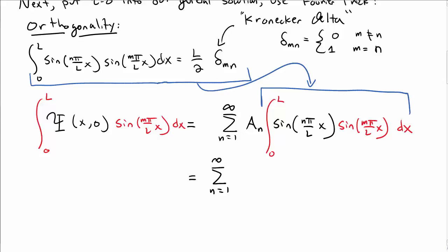And the beauty of doing this is that this integral over here is just the orthogonal integral. So I can replace the integral on the right-hand side by L over 2 delta Mn. The Kronecker delta only picks out one value from the sum, so I just get L over 2 times a sub m.